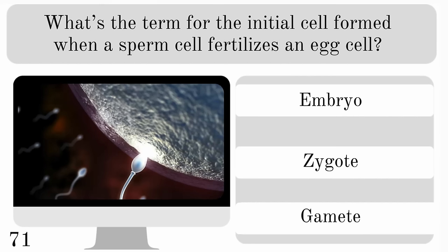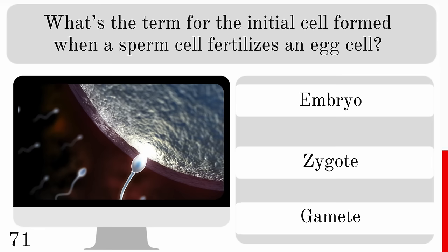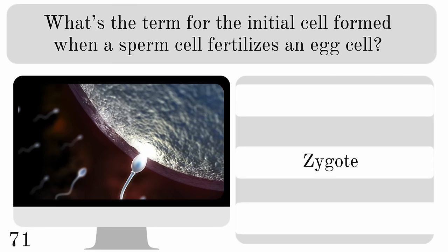What's the term for the initial cell formed when a sperm cell fertilises an egg cell? Is it the embryo, zygote or gamete? And the answer is zygote.